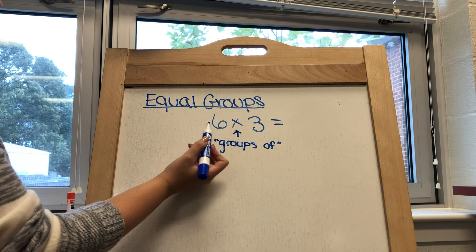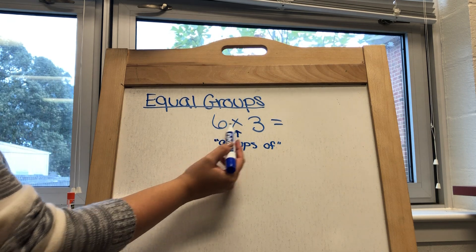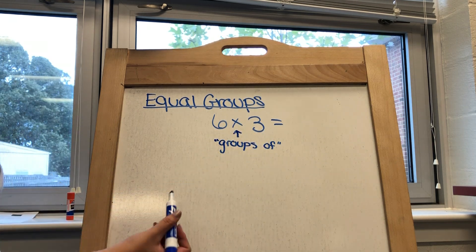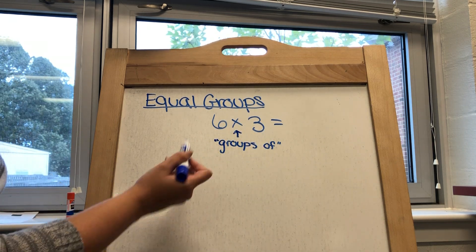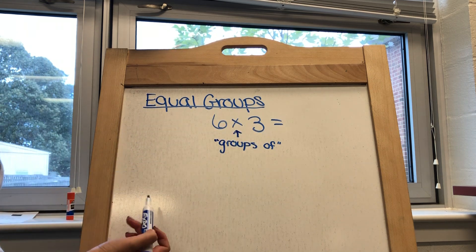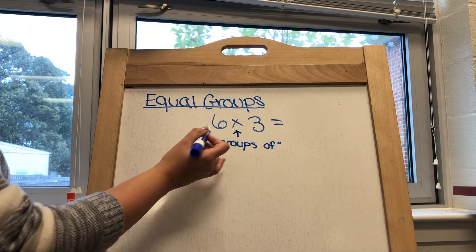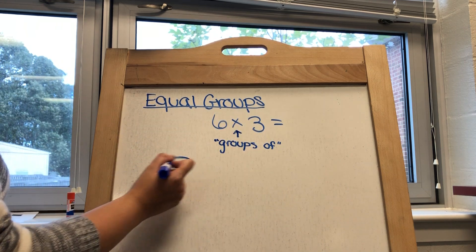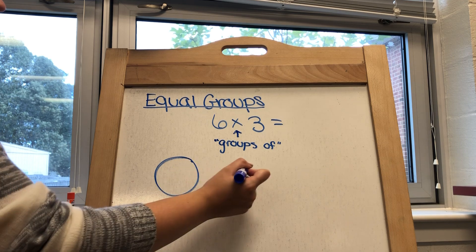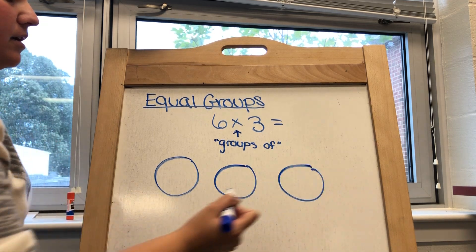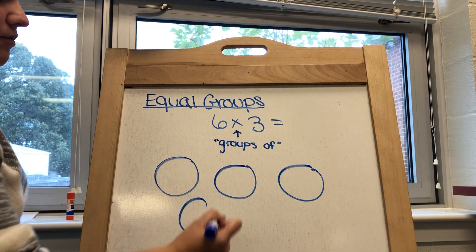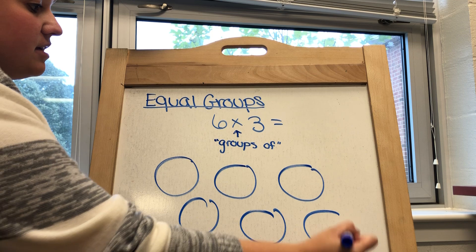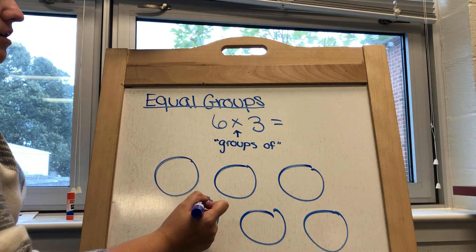So what this is really saying is that you have six groups of three. If I were to draw the equal groups model, I would have six groups — one, two, three, four, five, six.